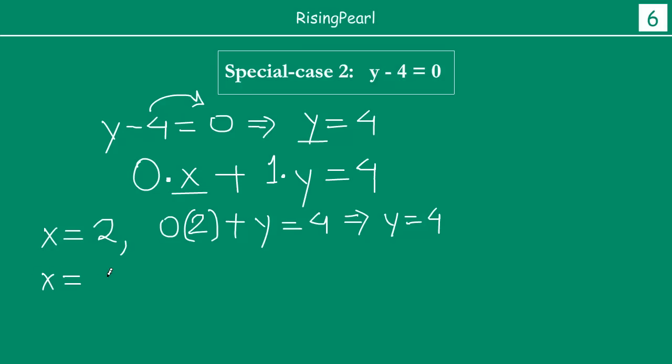Now, chalo dosto, let us do one thing. Now, x equals to, maan lijiye, let's take 4. If we take x as 4, so 0 times 4, so we put 4 in place of x, plus y is equal to 4. This gives us 0 times 4 is 0, so y equals to 4.